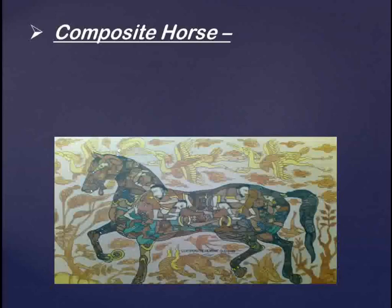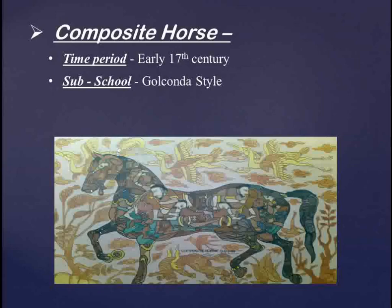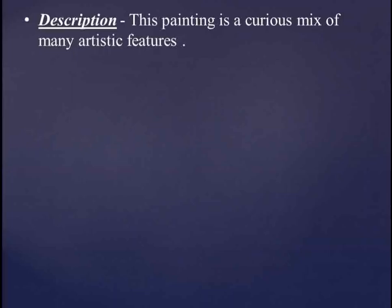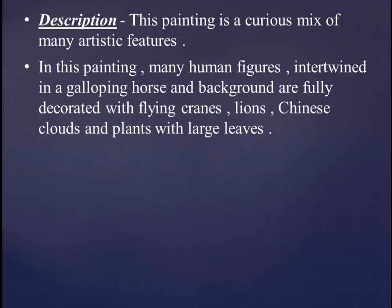The next painting is a composed painting. If you can see, there are many figures — a horse and many human characters have been created together with the background. The time period is the early 17th century. This painting is related to the Golconda style of Deccan Art. In this painting there is a curious mix of many artistic features — many human figures intertwined in a galloping horse, and the background is fully decorated with flying cranes, lions, Chinese clouds, and plants with large leaves.